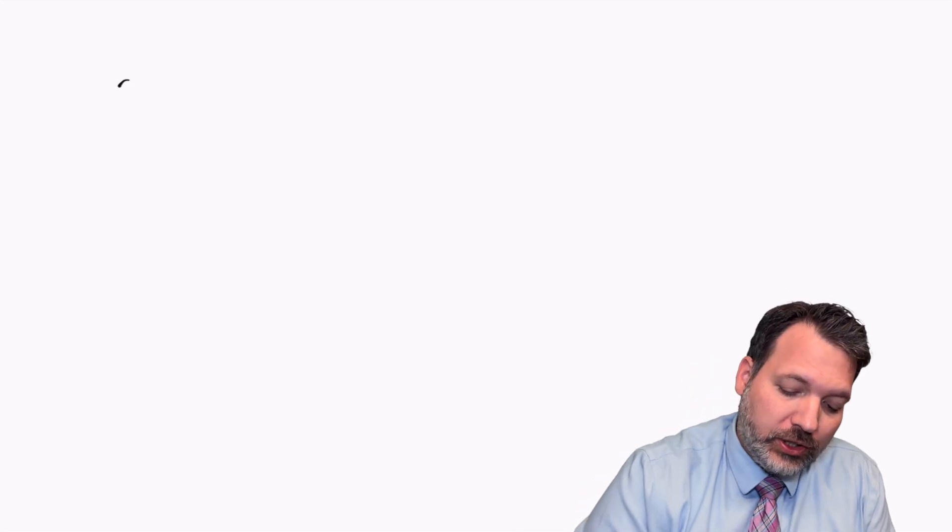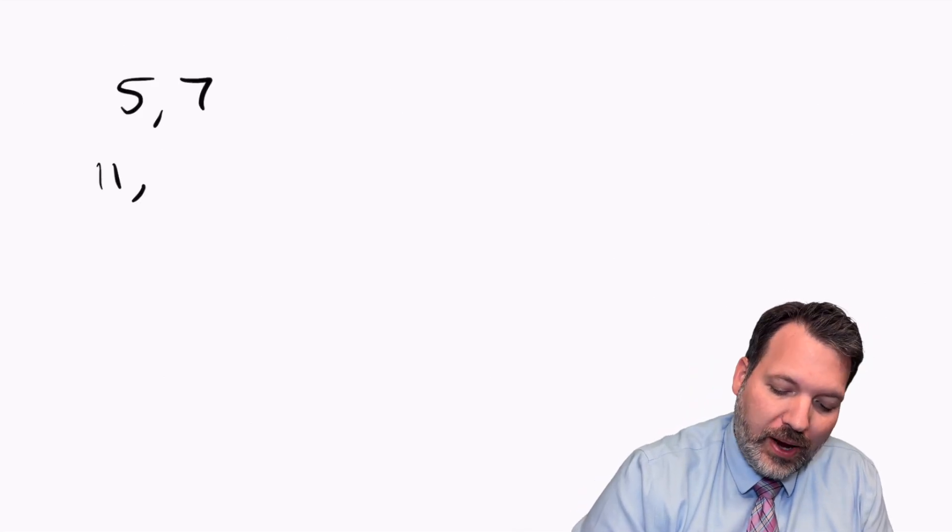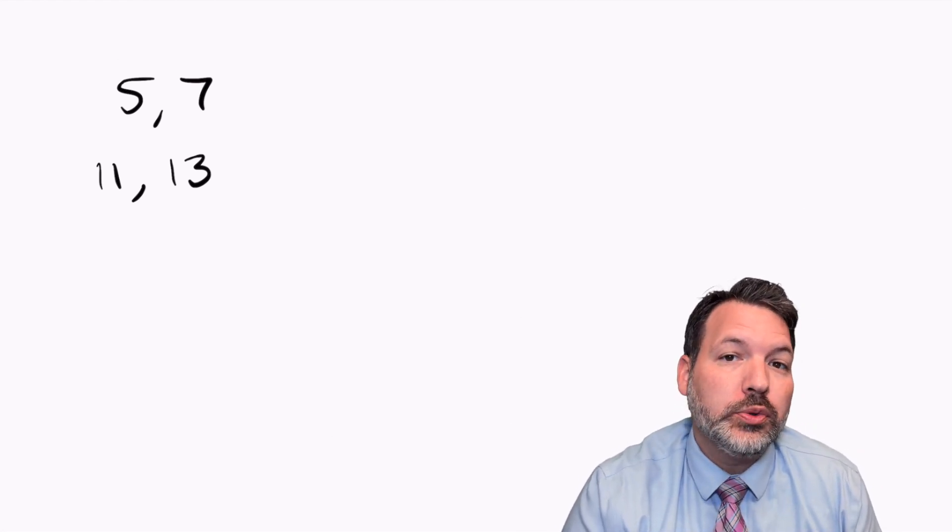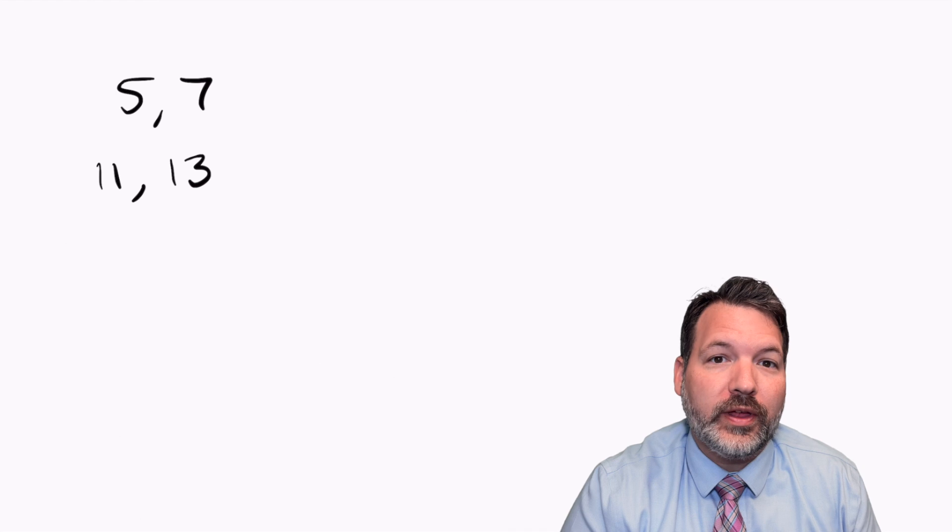So there's this thing called the twin primes conjecture. Twin primes are pairs of prime numbers like 5 and 7 or 11 and 13 that are just two apart. In fact, we give that a name, we call that a prime gap.